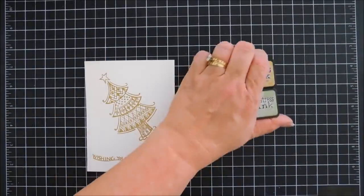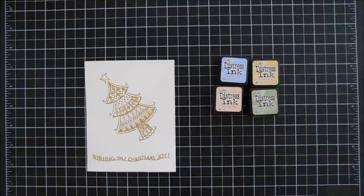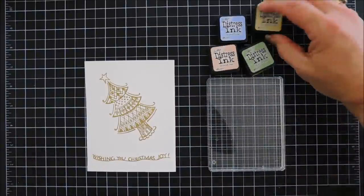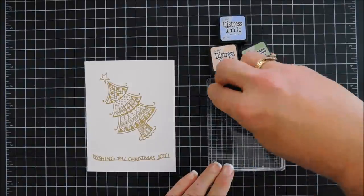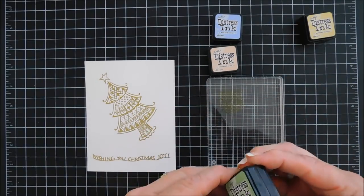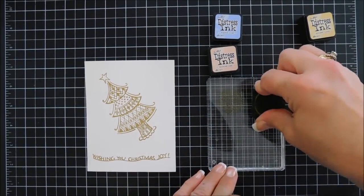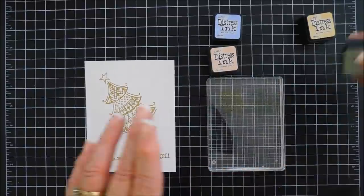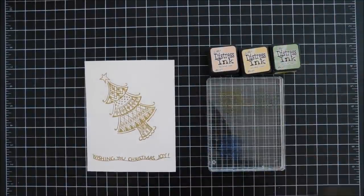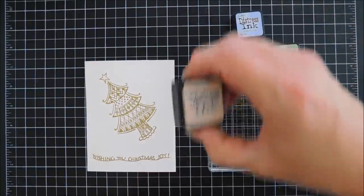Once my image and sentiment are melted, I think they look so pretty. We are going to bring in an acrylic block to do my smushing on. I have my little distress ink cubes, and I am going to use four of them. This first color here is Antique Linen, second color is Bundled Sage, third color is Shaded Lilac, and fourth color is Tattered Rose.